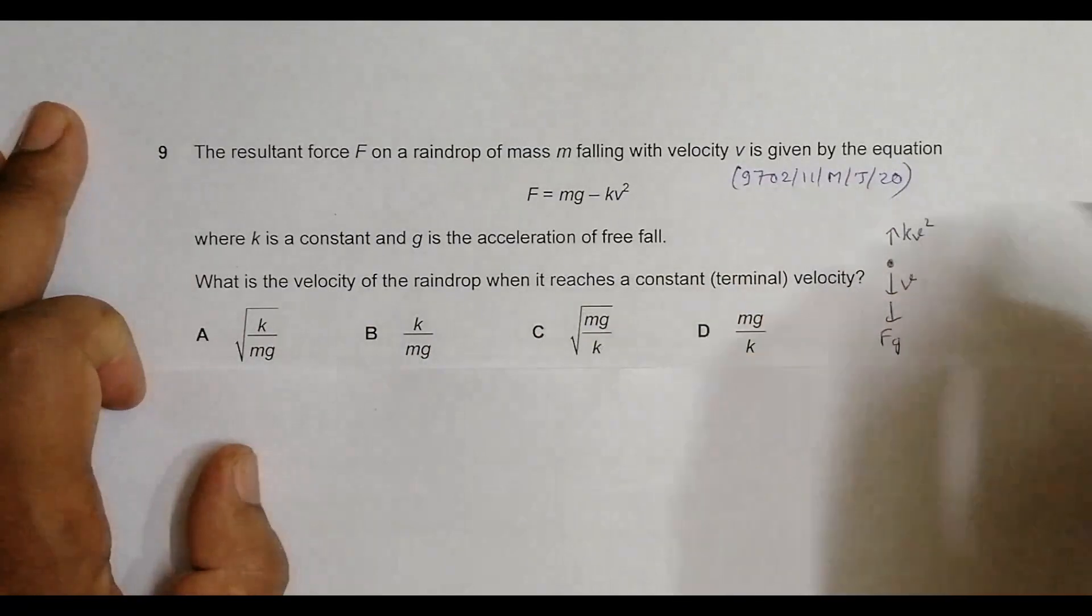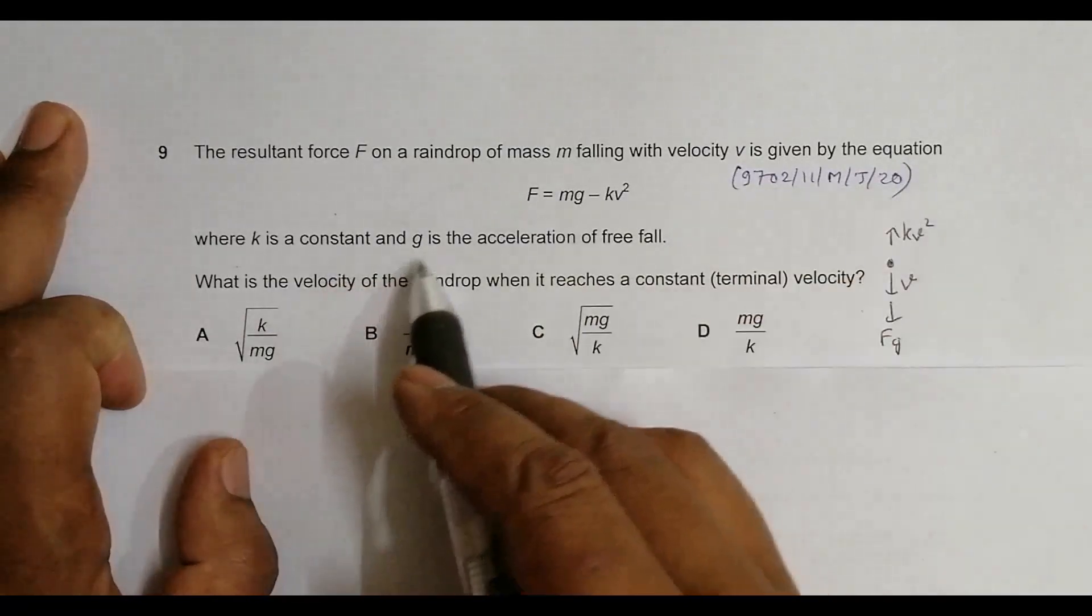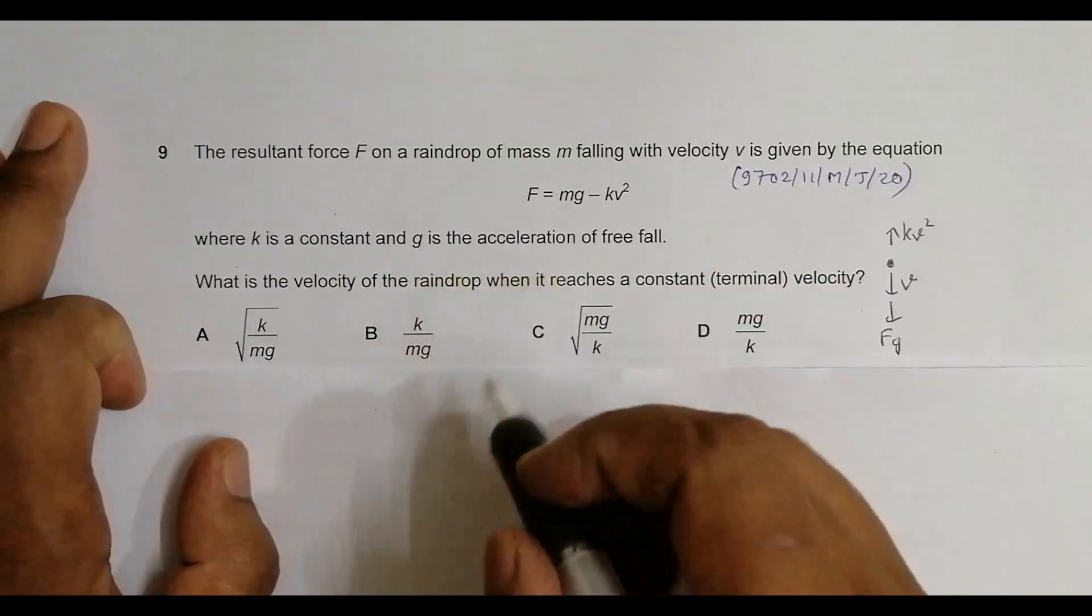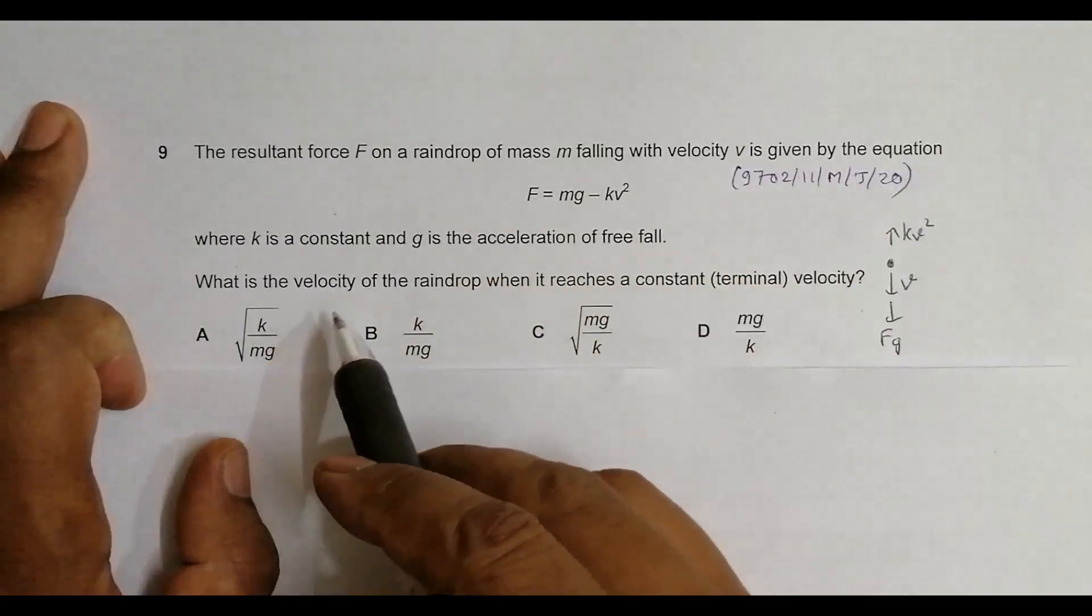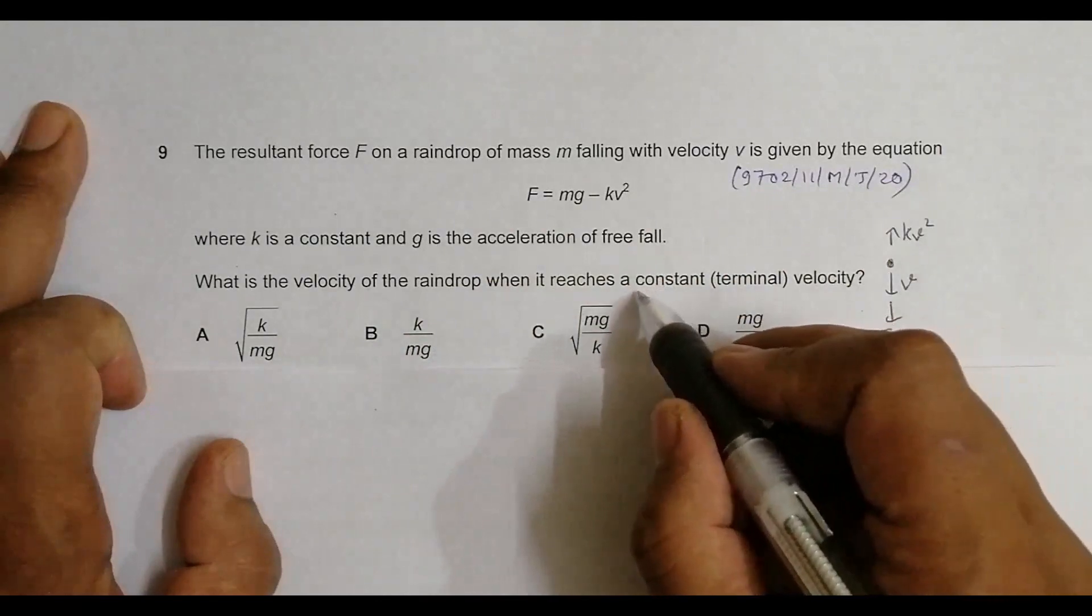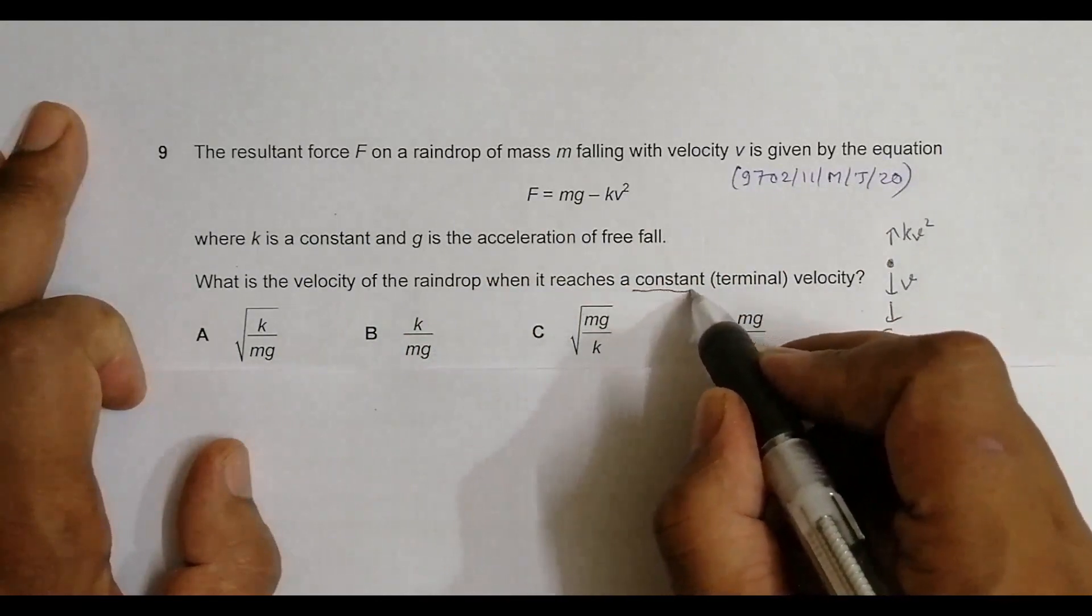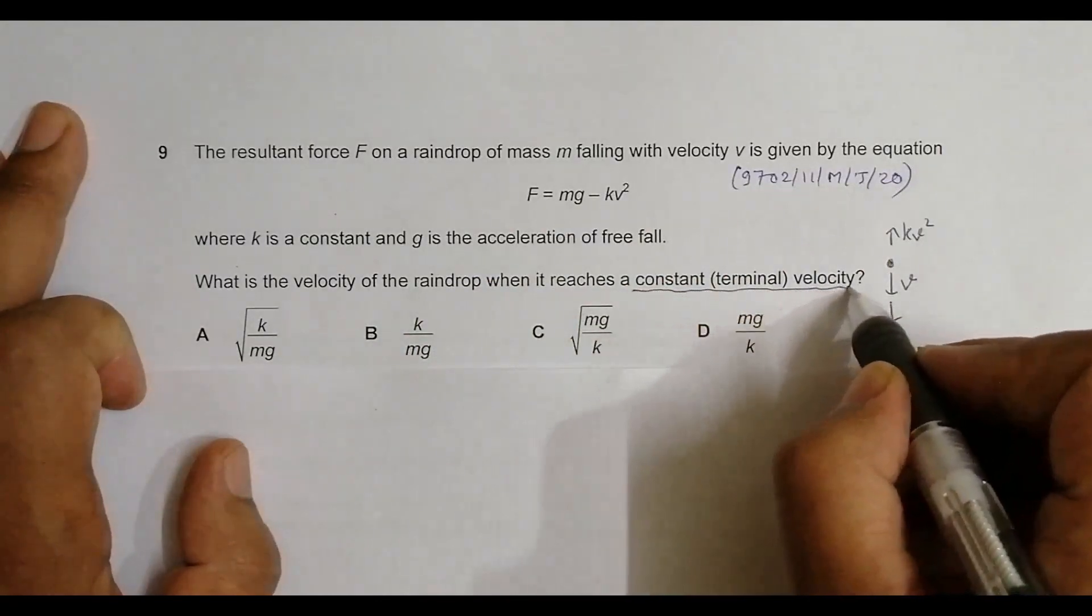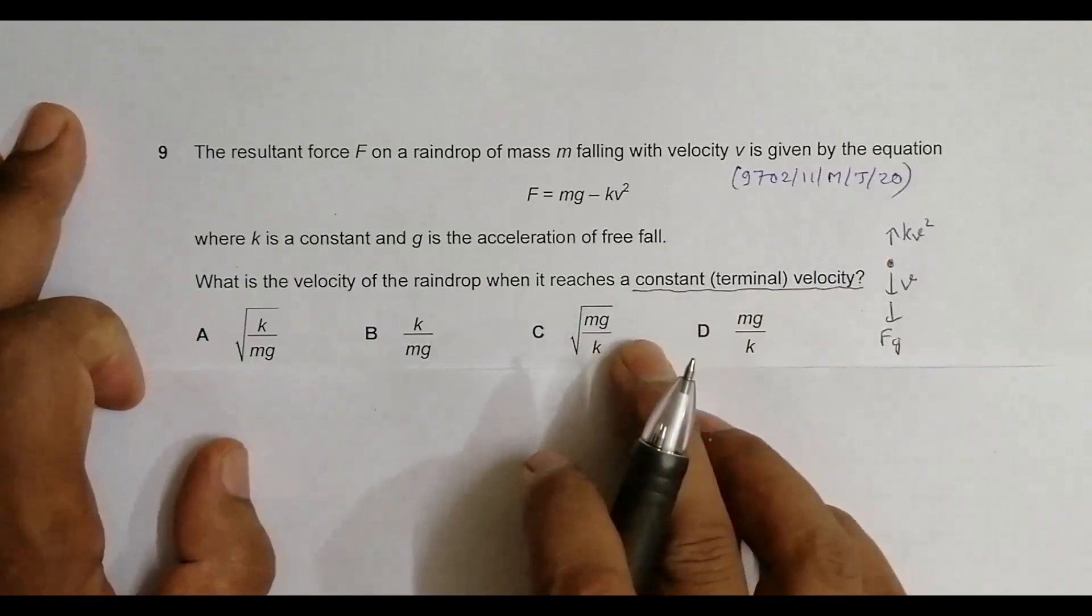The resultant is F equals mg minus kv squared, where k is a constant and g is the acceleration of free fall. What is the velocity of the raindrop when it reaches a constant terminal velocity? We have to find the velocity v of the raindrop when it attains terminal velocity.